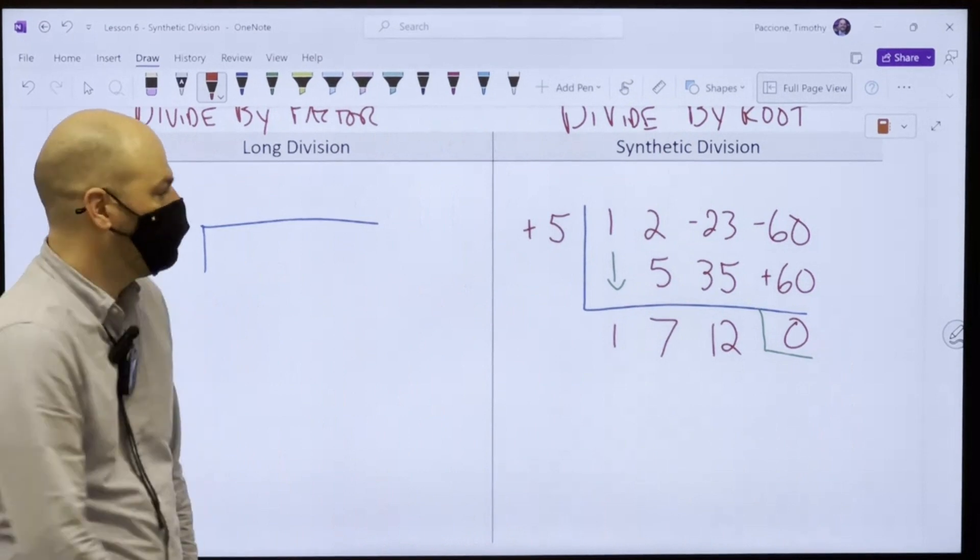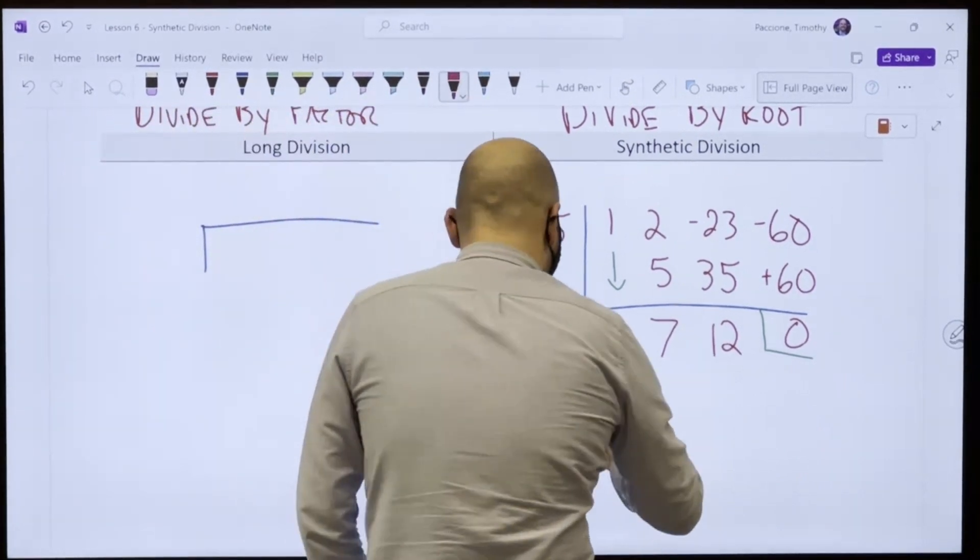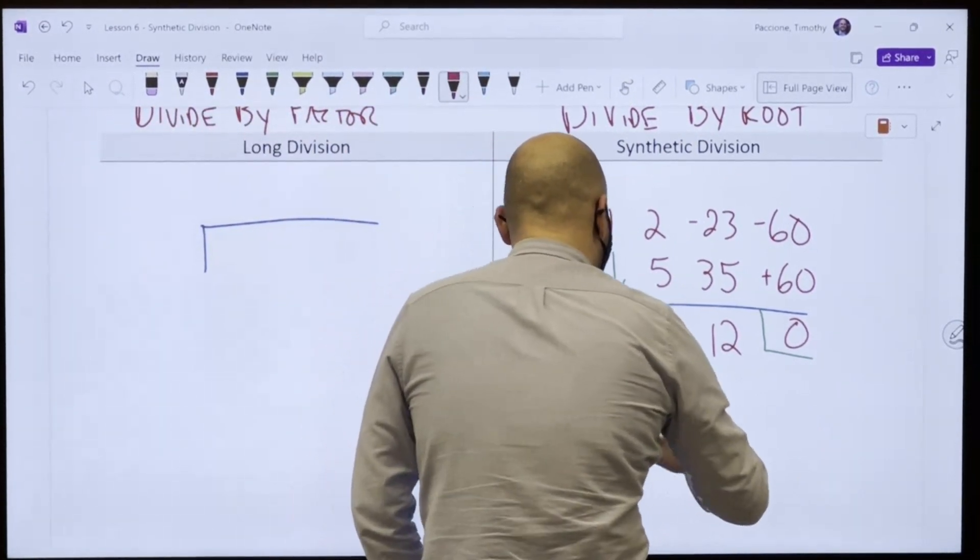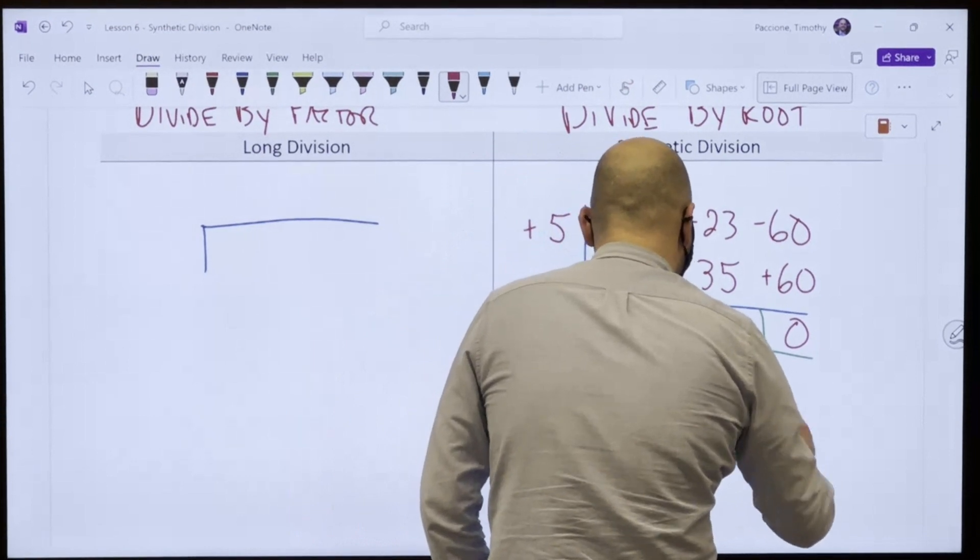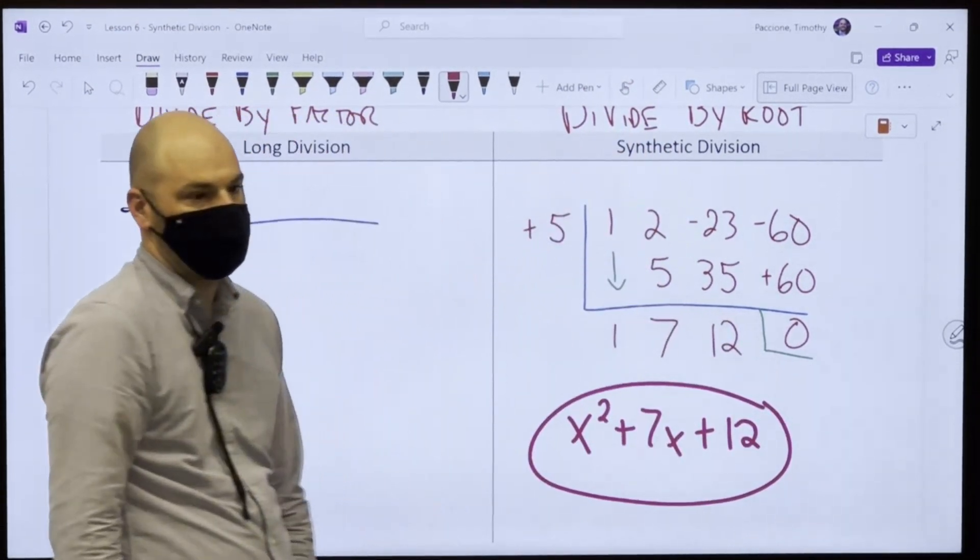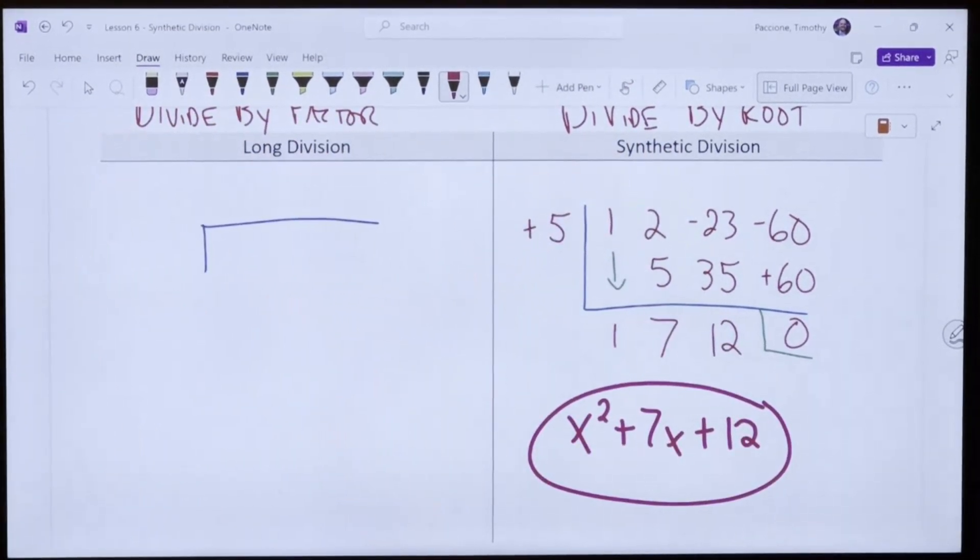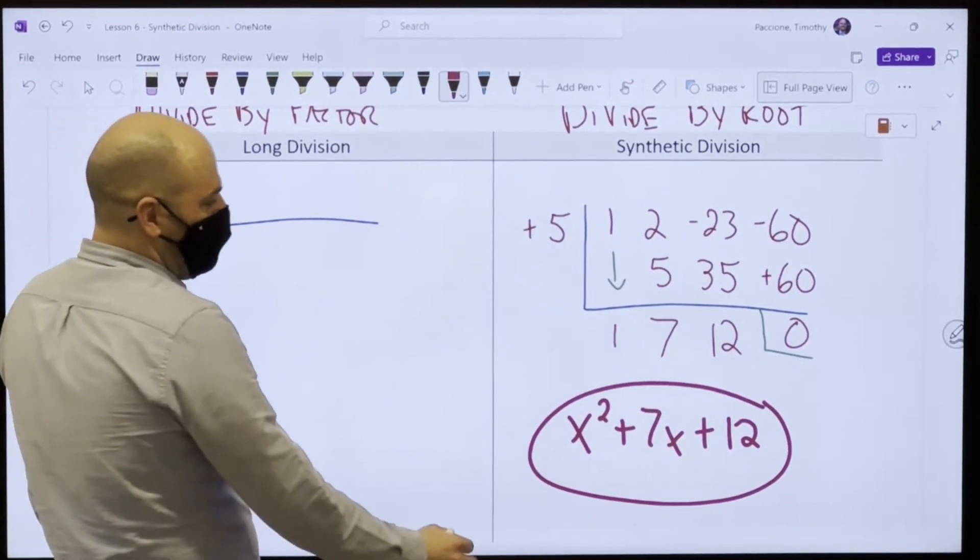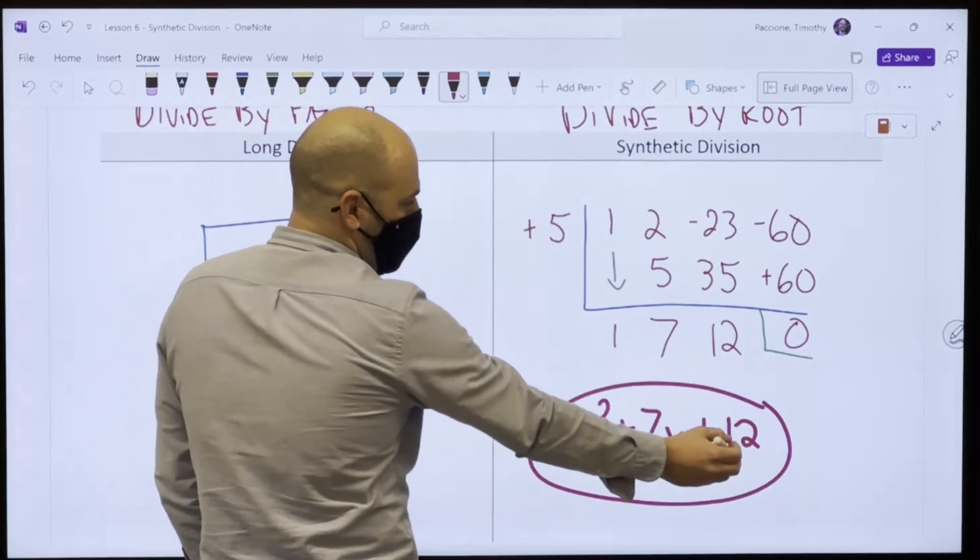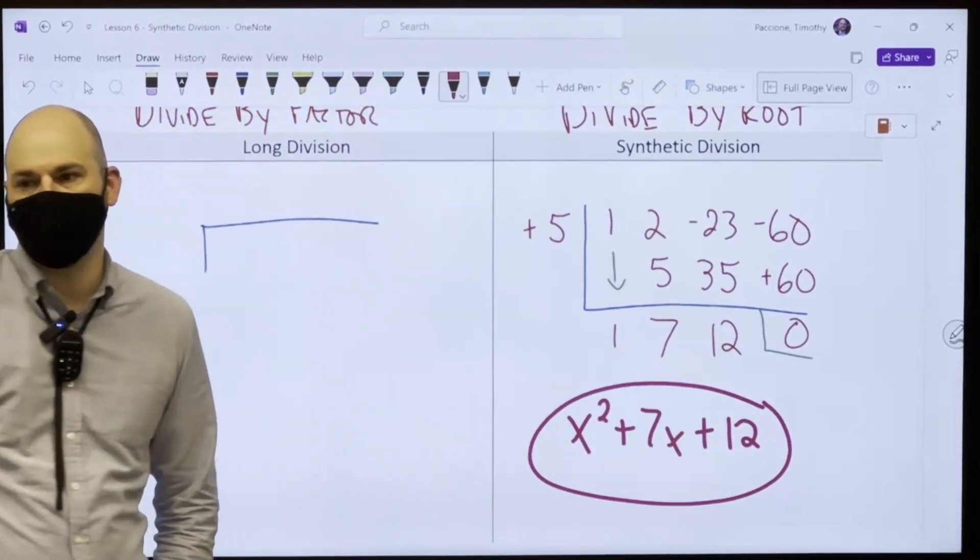Here's your answer. x squared plus 7x plus 12. And you're done. Oh, my goodness. Do I see where I got that? Yeah. 1, 7, 12. Remainder of 0. Done.